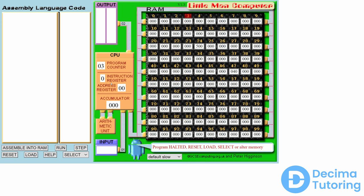Next we're going to look at a fetch-execute cycle — one in which the CPU actually does something. I'm going to change some values in memory. If I change the value in the first memory location to be 102, and the value in the third memory location — memory location two — to 99, and then run this program again, we can see the CPU has reset: the program counter goes to zero, the accumulator is initialized to zero, and the instruction and address registers are empty.